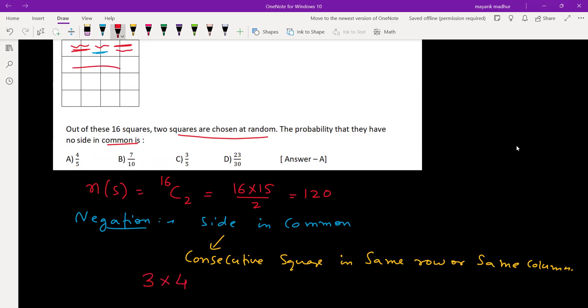And the same thing can happen in any one of these four rows. Similarly, we can do along the columns also. Like if you're going for the first column, it can be first-second, second-third, or third-fourth. So we have multiplied by 2 for the columns also: 3 times 4 times 2, that is 24.